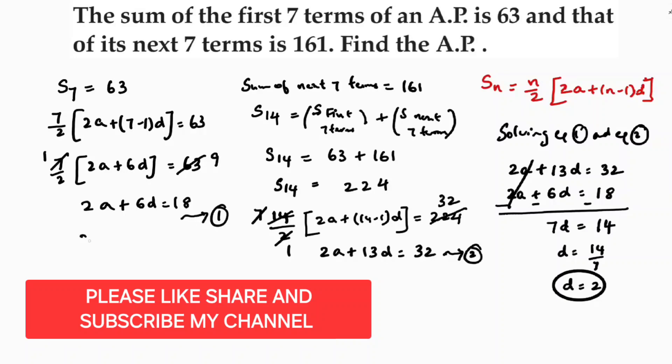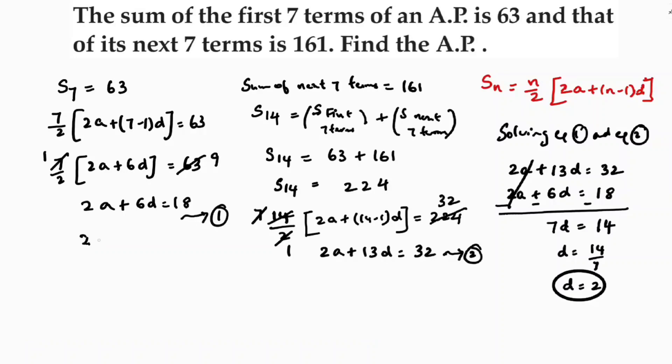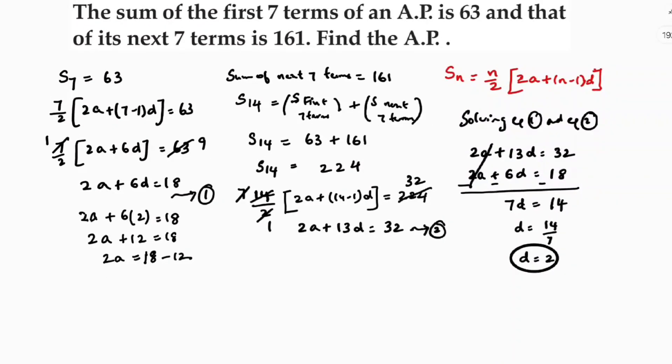Now if I will substitute d value in the first equation, 2a plus 6 into 2 is 18. 2a plus 12 equals 18. 2a equals 18 minus 12. 2a equals 6. So a equals 3. The value of a is 6 by 2 is 3.